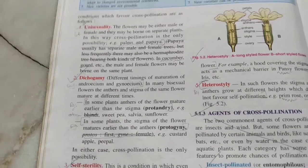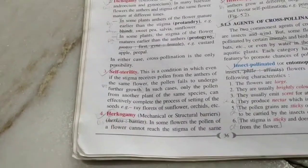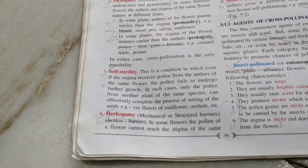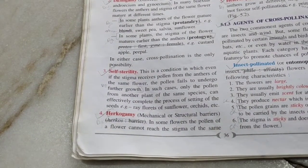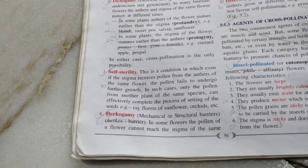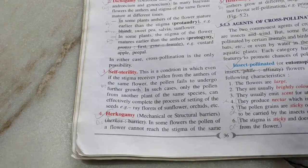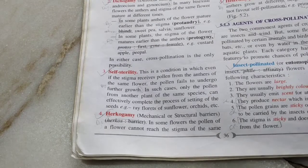The next contrivance is self-sterility. There are certain plants in which, if self-pollination happens, it leads to a process in which fertilization cannot take place.